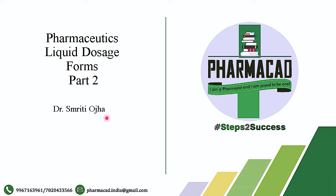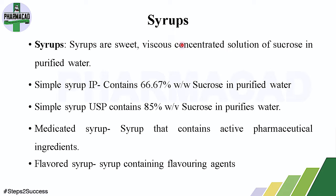This is explanation of liquid dosage forms Part 2. We are talking about various homogeneous monophasic dosage forms. Syrup is one of them. Syrups are defined as sweet, viscous, concentrated solutions of sucrose in purified water. They are sweet in taste and highly viscous in consistency.